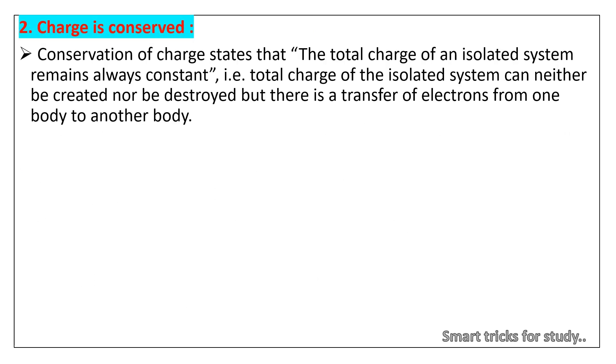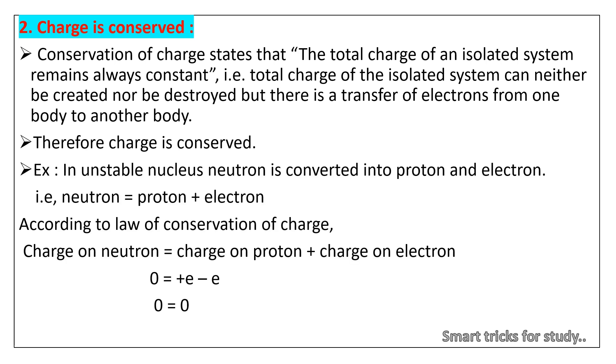2. Charge is conserved. Conservation of charge states that the total charge of an isolated system remains always constant, that is, total charge of the isolated system can neither be created nor be destroyed but there is a transfer of electrons from one body to another body. Therefore charge is conserved. Example: An unstable nucleus neutron is converted into proton and electron. A neutron turns into a proton and an electron. The proton and electron thus created have equal and opposite charges and the total charge is zero before and after the creation. That is, neutron = proton + electron. According to law of conservation of charge, charge on neutron = charge on proton + charge on electron. 0 = +e - e. That is, zero equals zero.